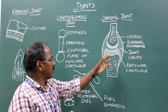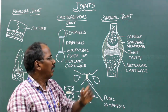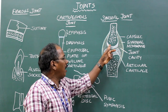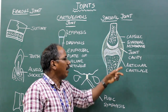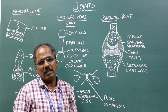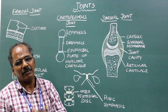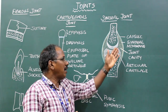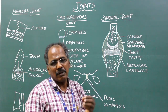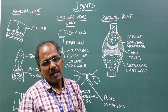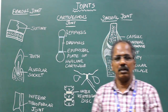There is a presence of joint cavity. The articular ends are lined by articular cartilage, which is of hyaline type. The synovial membrane, which secretes synovial fluid, acts as a lubricant for the joint.